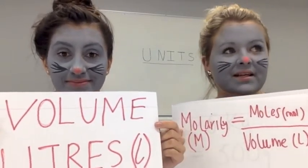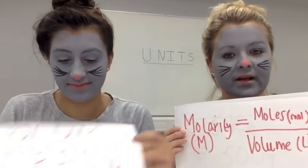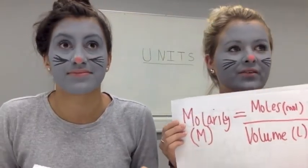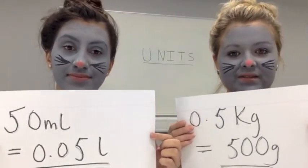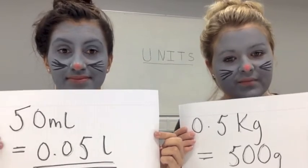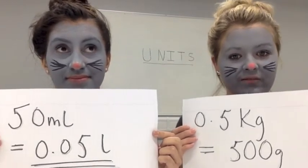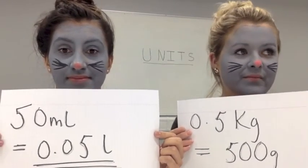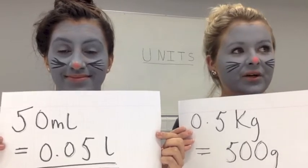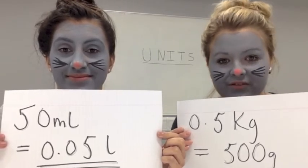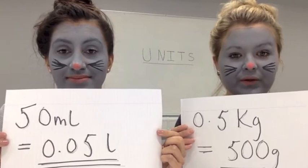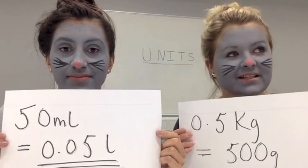Sometimes you may need to convert the units. For example, if you're given a question where the mass is written as 0.5 kilograms, you must convert this to 500 grams. Similarly, if you're given a volume of 50 millilitres, you must convert this to 0.05 litres.